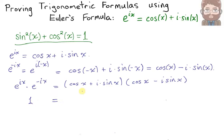On the right-hand side, multiplying together the first two terms, we get cosine squared x. Multiplying together the outside terms, we get negative i times cosine x times sine x. Then multiplying together the inside terms, we get plus i times sine x times cosine x. And finally, multiplying together the two last terms, we get negative i squared sine squared x.